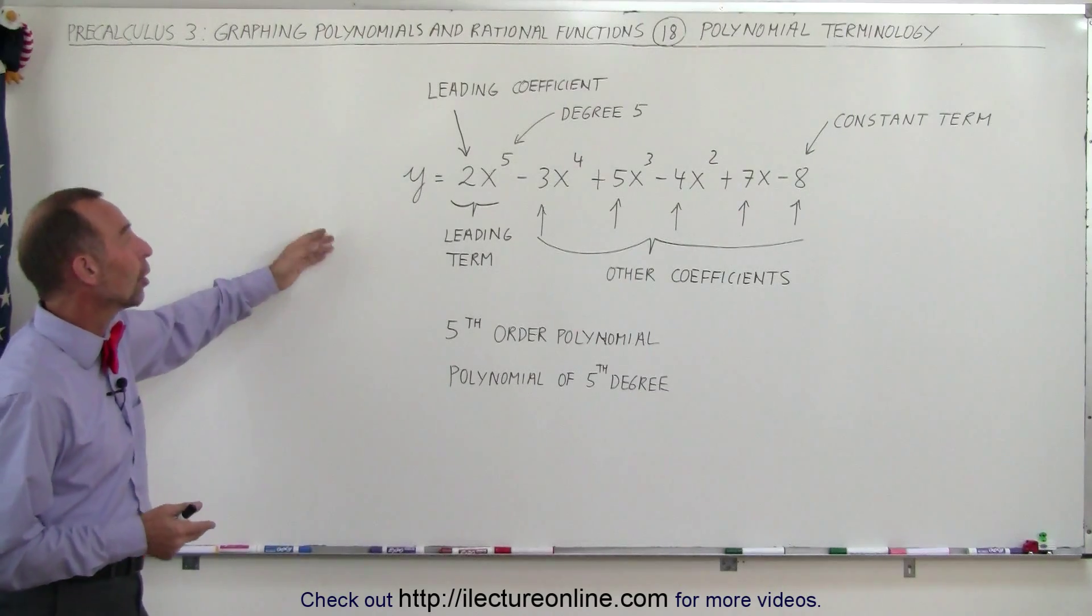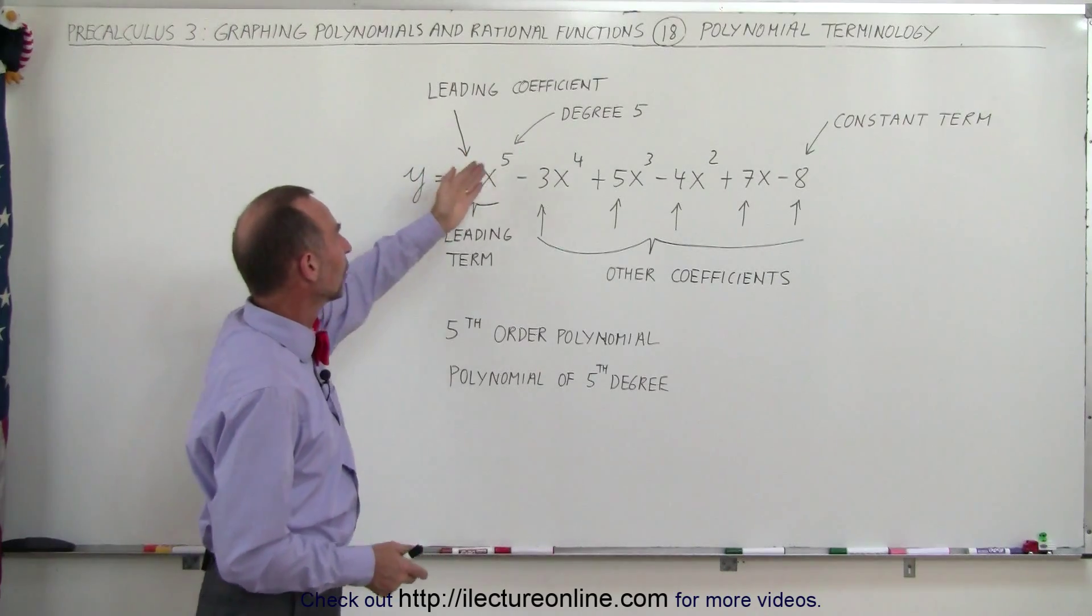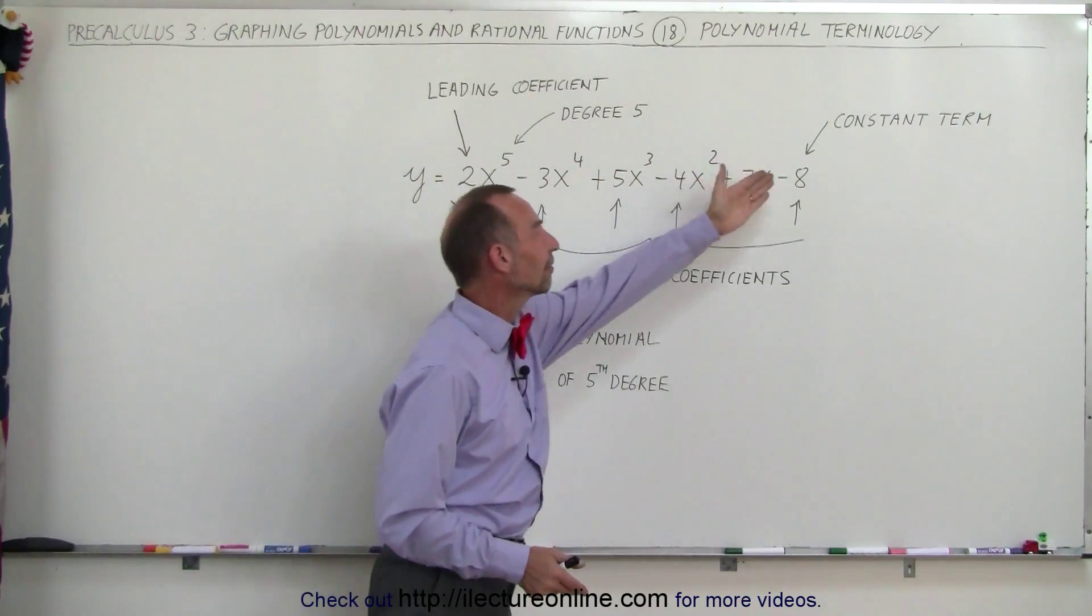So here we have what we call a fifth order polynomial. Here's the leading term. We have one, two, three, four, five, six terms.